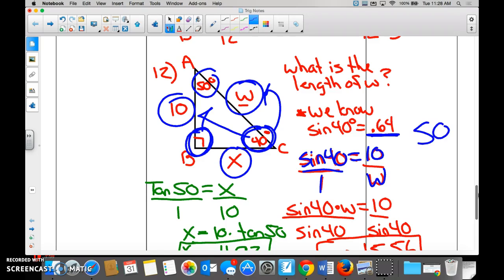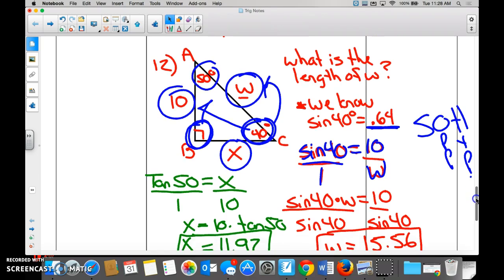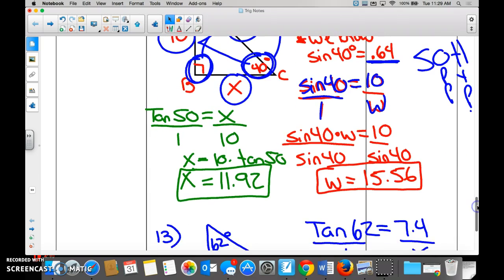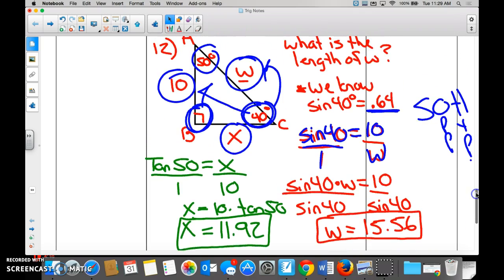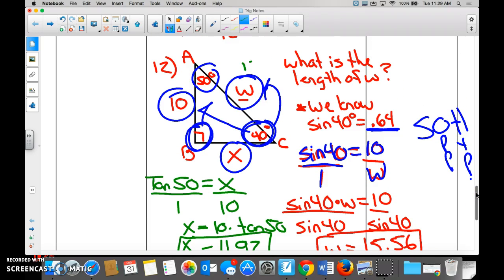gave ourselves sine of 40 is equal to 10 over W and set both up as fractions. Remember, sine would be opposite over hypotenuse, right? And then you do what you do. You solve for W. We did cross products. Divided by the sine of 40, 10 divided by the sine of 40 was 15.56.